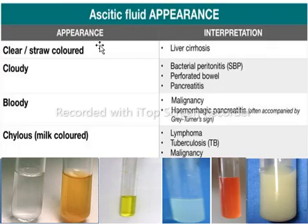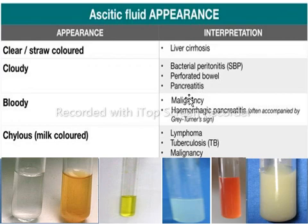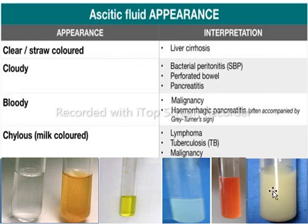Regarding the appearance of ascitic fluid: peritoneal fluid that is clear or straw-colored is often associated with liver disease. A cloudy sample has high protein content or high cell count due to infection, such as bacterial peritonitis, perforated bowel, and pancreatitis. Bloody ascites is characterized by malignant tumour and can be caused by hemorrhagic pancreatitis or perforated ulcers. A milky appearance usually indicates elevated triglyceride concentration — such fluid is referred to as chylous ascites and can be related to lymphoma, TB, or malignancy.